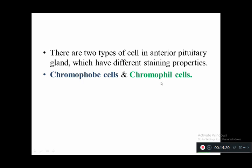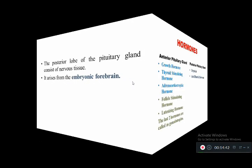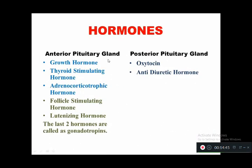The posterior lobe of the pituitary gland consists of nerve tissue derived from the embryonic forebrain. The anterior pituitary secretes: growth hormone, thyroid stimulating hormone, adrenocorticotrophic hormone, follicle stimulating hormone, and luteinizing hormone. The follicle stimulating hormone and luteinizing hormone are known as gonadotrophins. The posterior pituitary secretes oxytocin and anti-diuretic hormone.